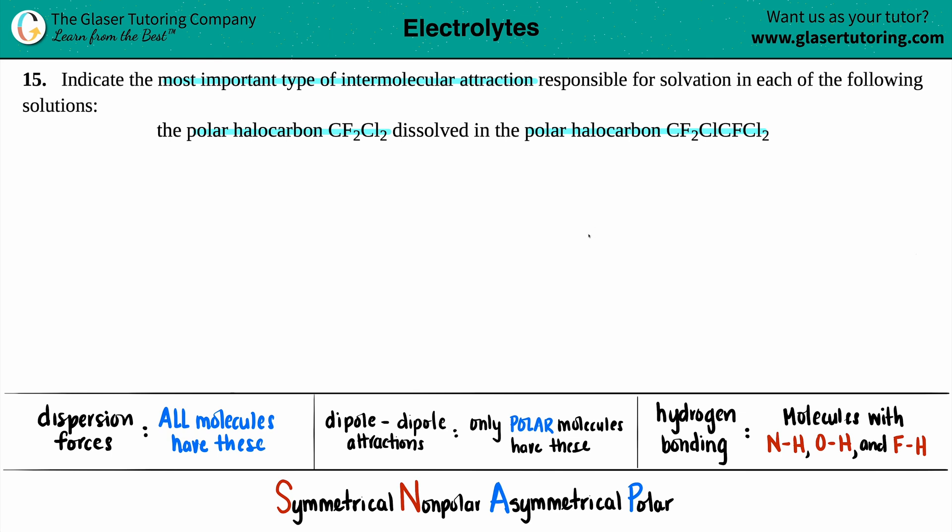Now, this all just comes down to knowing what types of compounds are in question. So in this case, we have CF2Cl2, and they gave us a little bit of a hint. They told us that this was a polar molecule. So I don't even have to draw this out. Generally speaking, if they don't tell us any information about what a molecule is, I would draw the Lewis structure out just to see whether it's nonpolar or polar. And then I would use your acronym SNAP. But they already told us that these molecules were polar. So we don't really have to do that step.